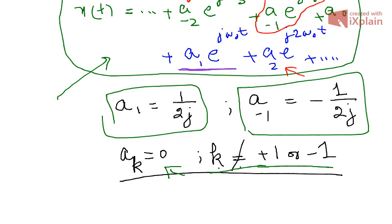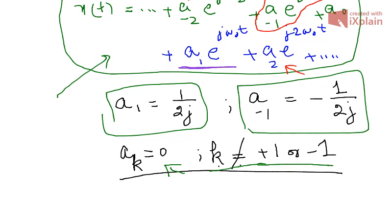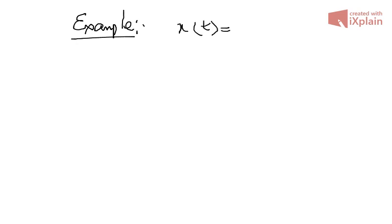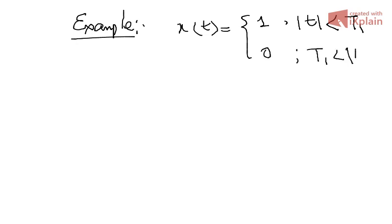This is how we determine the Fourier coefficients a_k by the method of comparison. Now let's try a different, slightly trickier example. In Example 2 we have a real waveform x(t) defined as: x(t) = 1 when |t| < T₁, and x(t) = 0 when T₁ ≤ |t| ≤ T/2.